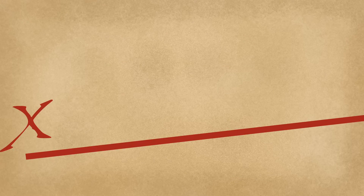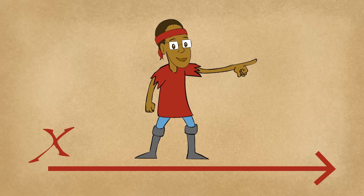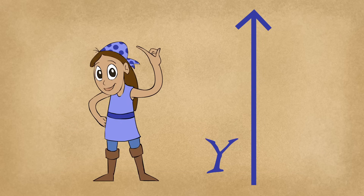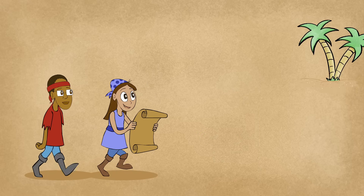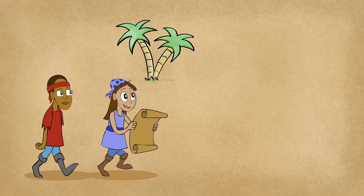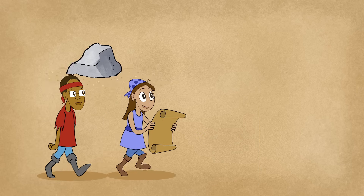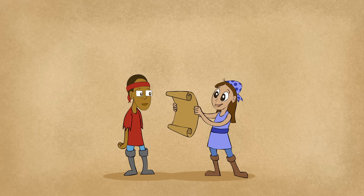On the x-axis, count to the right; on the y-axis, count from the ground — that's how a coordinate's point is found.